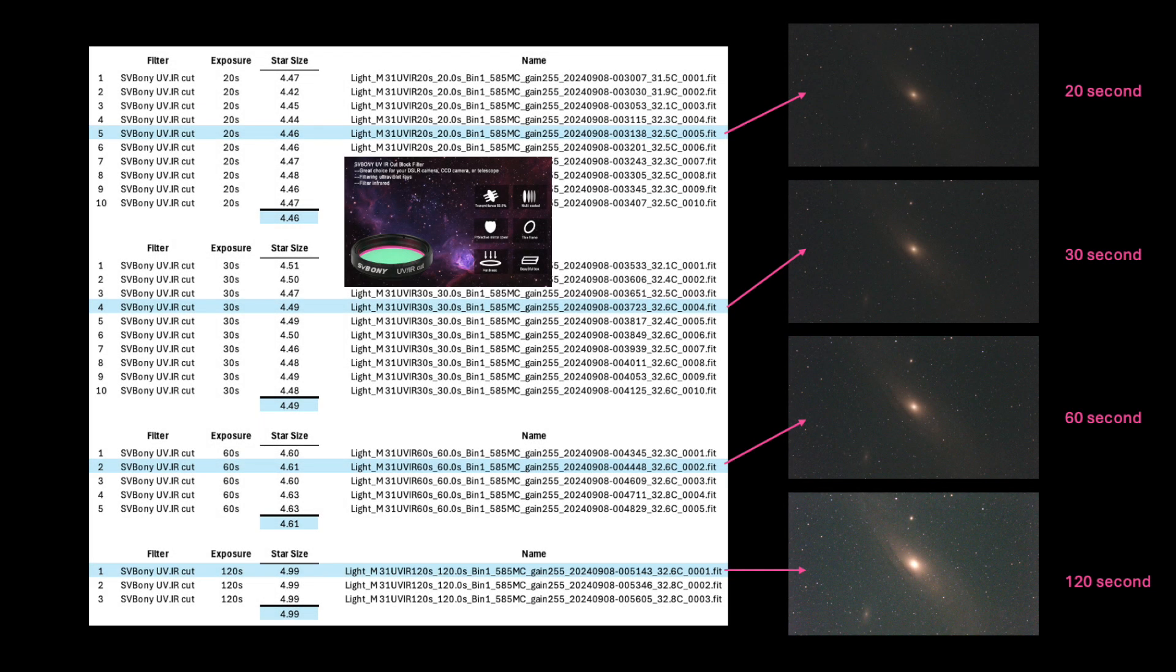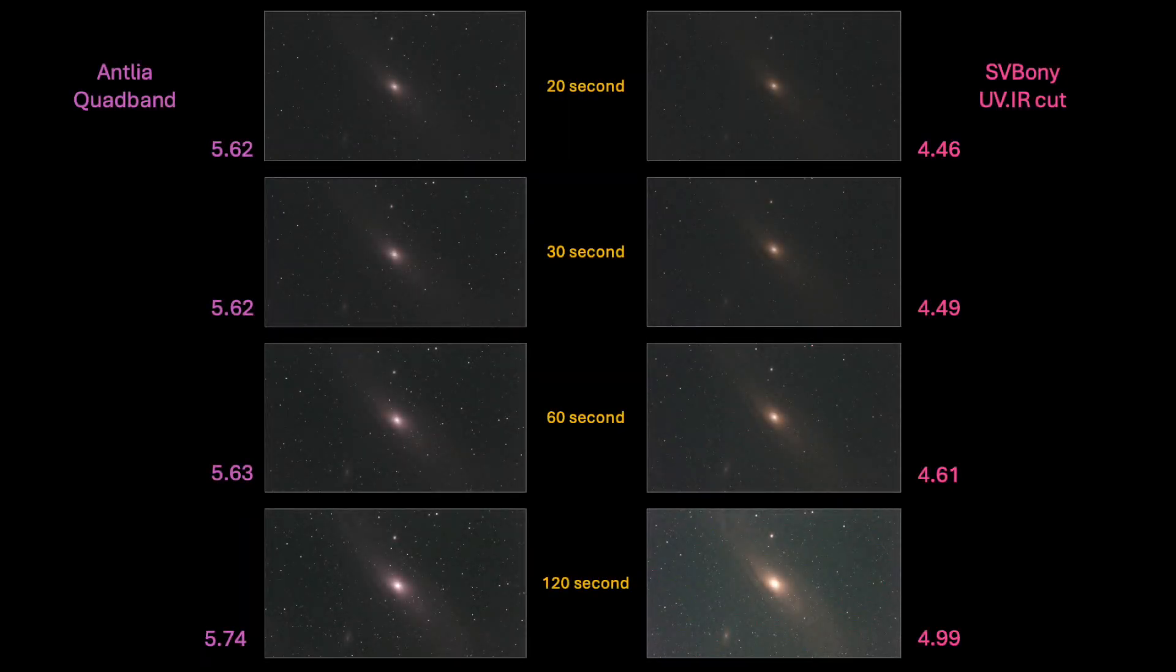Values for the set of UV-IR cut filter images were also analyzed and displayed here in a similar way. But what is most interesting is a comparison of these two sets against each other. Here you can see that comparison. Included are representative single subframes and the average star size group values. The highest number from the Zevboni UV-IR cut filter data at 120 seconds exposure time, an average value of 4.99, is still lower than the lowest value of the Antlia quad band set, even at only 20 seconds exposure.